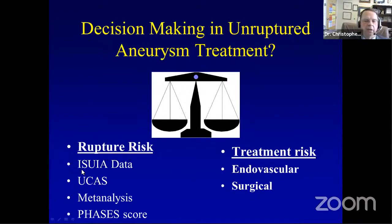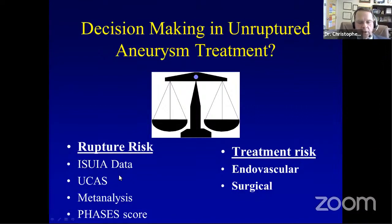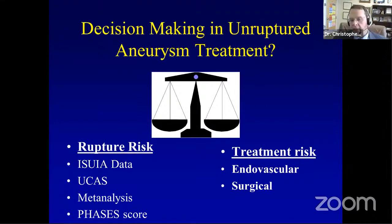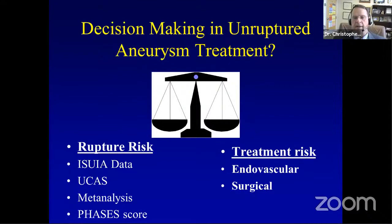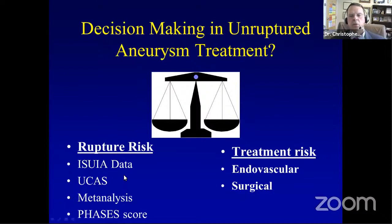The ISUIA — International Study of Unruptured Intracranial Aneurysms — was the first study to prospectively examine the natural history of unruptured aneurysms. I was a member of this trial with David Wiebers and 60 other centers. The UCAS study is a Japanese study of unruptured cerebral artery aneurysms, designed similarly but with over 5,000 patients, allowing stratification by site and size of rupture risk. I'll also walk through the meta-analysis and the PHASES scale.